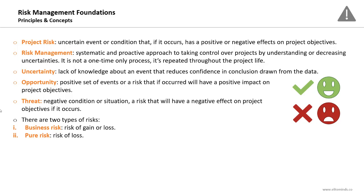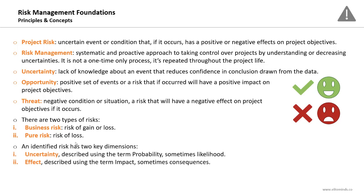There are two types of risks: business risk, which is a risk of gain or loss, and pure risk, which is the risk of loss only. For example, from the PMI RMP exam: the probability of having a fire in your building — is this a business or pure risk? It's a pure risk, because you cannot have any gain from a fire. Business risk involves profit, gain, or loss; pure risk involves loss only.